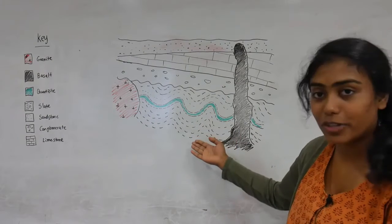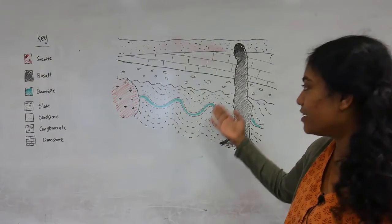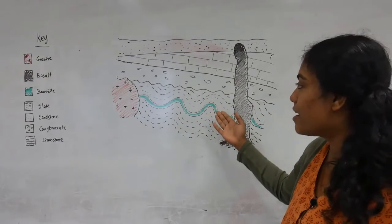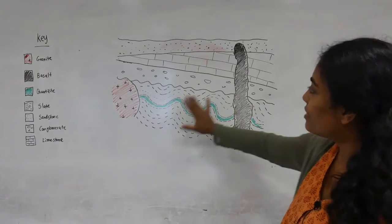So the mudstone would have transformed into the slate, the sandstone with quartz-rich clasps would have transformed into the quartzite, and then we formed this.